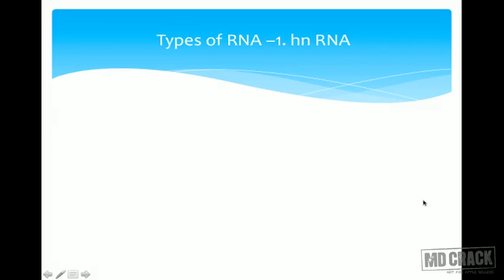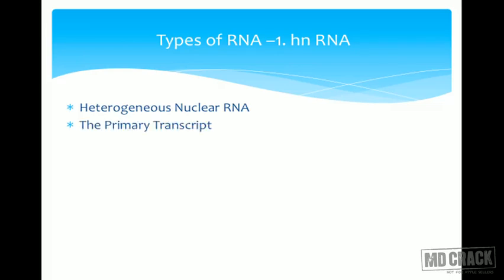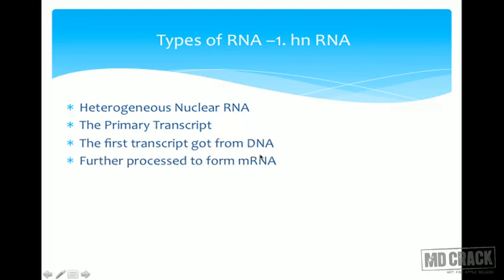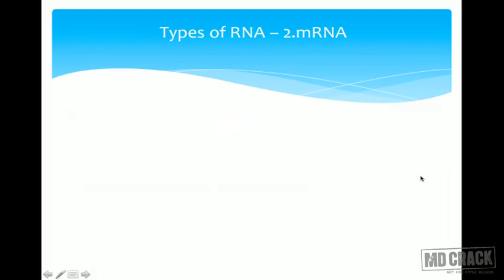The different types of RNA include hnRNA, mRNA, rRNA, tRNA, and snRNA. The first type is hnRNA — heterogeneous nuclear RNA. This is also called the primary transcript; it is the first transcript obtained from DNA. It is further processed to form mRNA, and it contains both introns and exons.